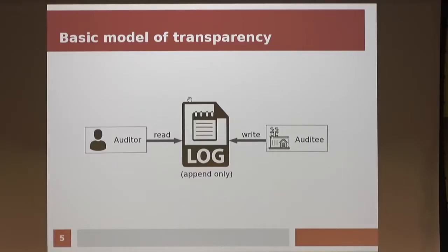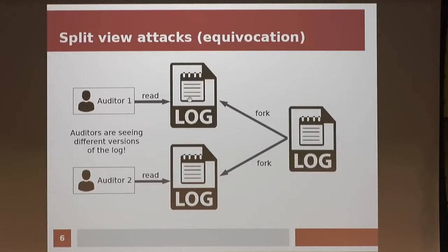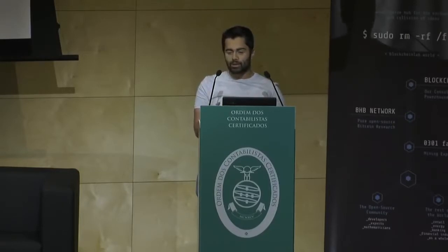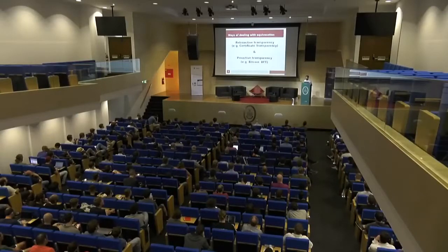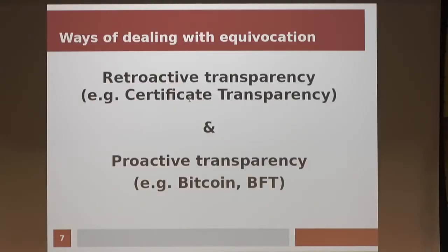Systems like these have been proposed for almost two decades using simple Merkle trees, but the obvious problem is: what happens if the log is forked and the person responsible for maintaining the log gives different people different versions with different things inside? With the Apple versus FBI example, what if Apple just forked their log and put a backdoor update in that log for someone? They wouldn't know it was the same log given to everyone else. That's equivocation, and we know how Bitcoin deals with this using proof of work.